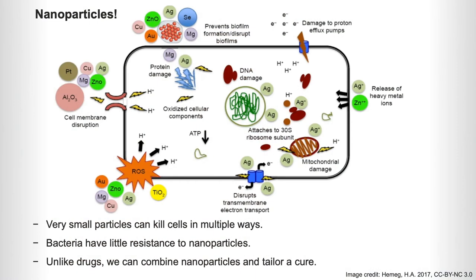What's the answer? My answer is nanoparticles. Nanoparticles can cure cells in multiple different ways, and this diagram is meant to be confusing on purpose because there are just so many different ways nanoparticles can invade a cell. Bacteria have little resistance to nanoparticles at the moment, and unlike drugs we can really mix and match different combinations of nanoparticles to tailor a cure.